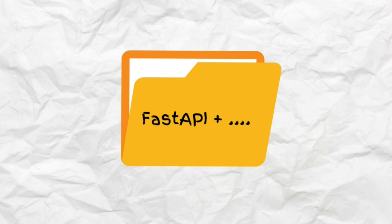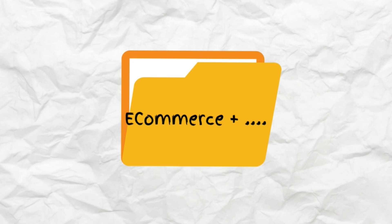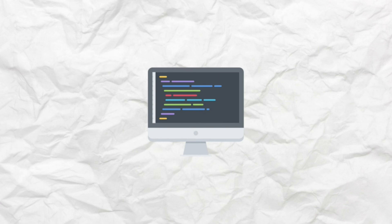To use folders related to the second application, search for files that start with 'fastapi'. Our last application is the main e-commerce application. The files related to this application start with 'ecommerce', so to use those files, search for files that start with 'ecommerce'.